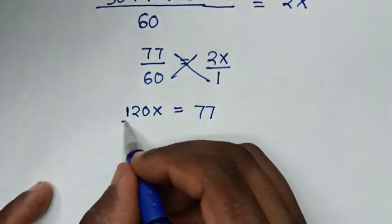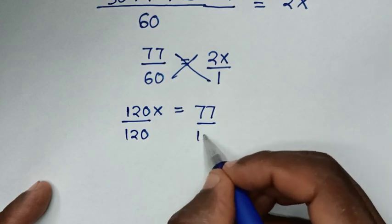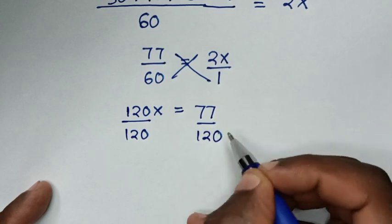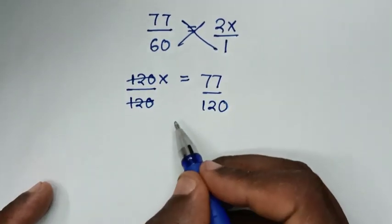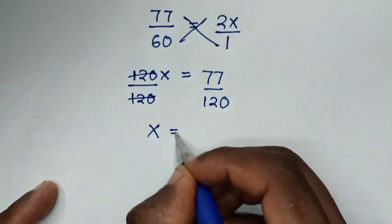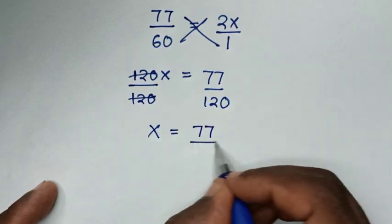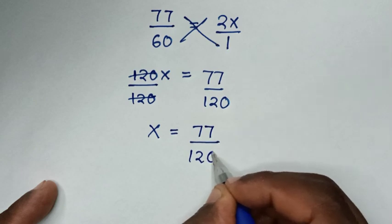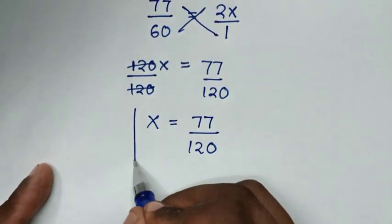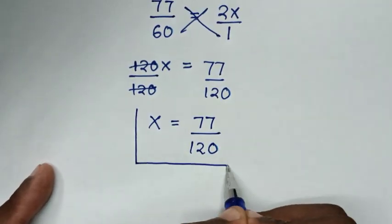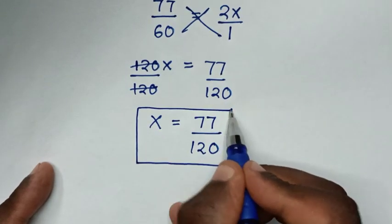We divide both sides by 120, so x equals 77 over 120. This is the final answer for the value of x in this problem.